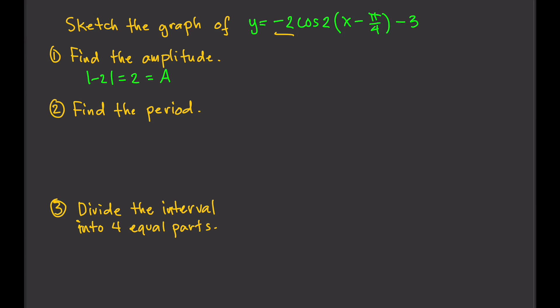Next, find the period. The period is 2 pi over the absolute value of b. In this case, b is 2, so the period is 2 pi over 2, which equals pi. Therefore, one period runs from 0 to pi.